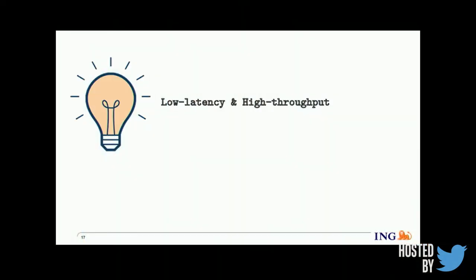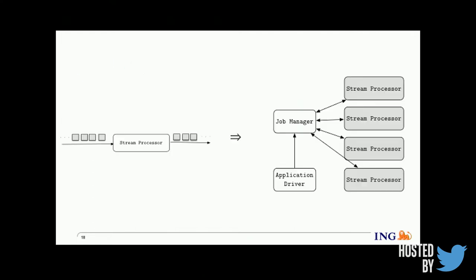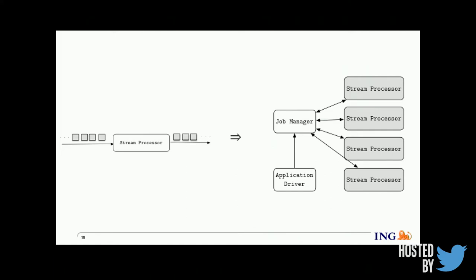This kind of architecture poses several requirements. The system has to perform with low latency and high throughput, must support fault tolerance and high availability, and should support reliable processing. That's why the stream processing landscape has evolved from single-node processors to multi-node distributed stream processing systems over the last 10 years.